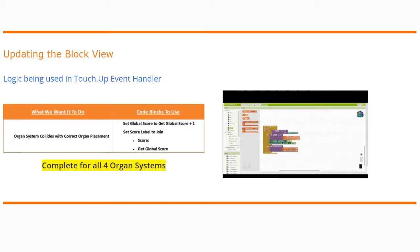With the designer view complete, the next step is to go to the Block View and look at the logic behind our variables. The logic will be located in our touch-up event handlers — you have four of these: Brain, Respiratory System, Digestive System, and Urinary System. We need to complete this code for all four. Whenever an organ system collides with its correct placement, the user gains a point. We'll do this by setting the global score to get the current global score plus one, and we'll also set the Score Label to reflect the change.